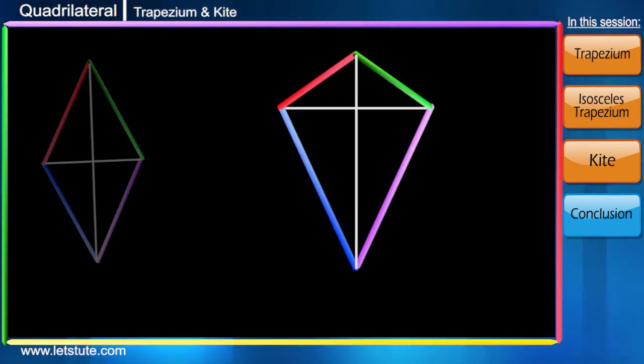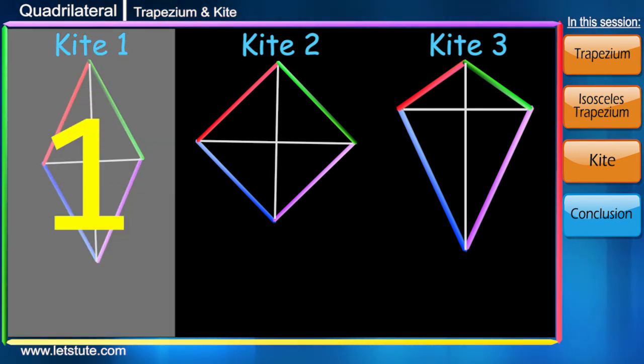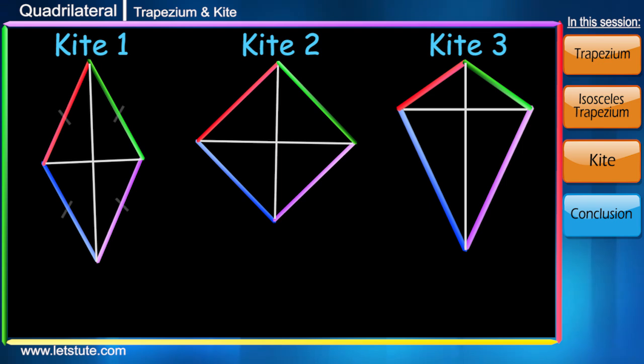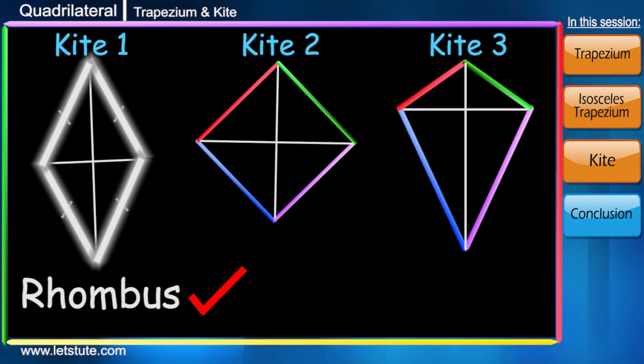I've made three kites and all of them are a bit different from each other. See my first kite. All its sides are of equal length. Can we call it a rhombus which we have learnt in our previous session? If all the sides are equal they have to be parallel so it becomes a rhombus, right?